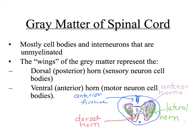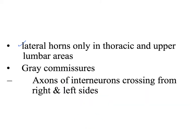The dorsal horn is responsible for sensory information — it contains sensory nuclei. The ventral or anterior horn is concerned with the motor control of skeletal muscles. The lateral horns are only in the thoracic and upper lumbar areas, and they contain visceral motor neurons that control smooth muscle, cardiac muscle, and glands — so these are involuntary.